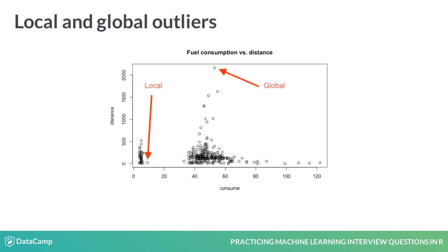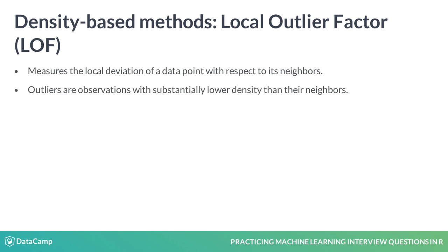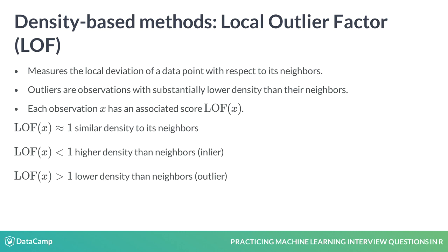Distance-based methods fail to properly detect outliers in regions exhibiting different spatial densities. These are called local outliers. For example, while the data point in the middle top of the figure could be regarded as a global outlier, there might exist multiple local outliers in different regions. The local outlier factor, or LOF, is an algorithm that measures the local deviation of a data point relative to its neighbors. Outliers are defined as data points with substantially lower density than their neighbors. Each observation receives an LOF score that indicates whether it is deemed to be a regular data point, an inlier, or an outlier. We will use the LOF function from the dbscan package to compute the LOF score.